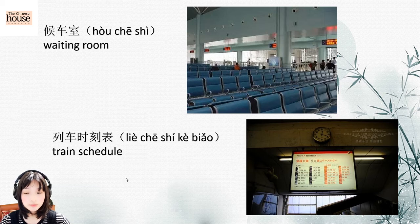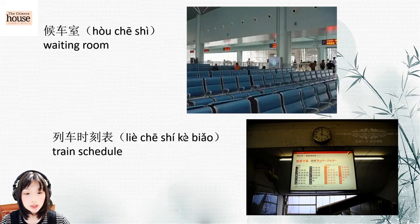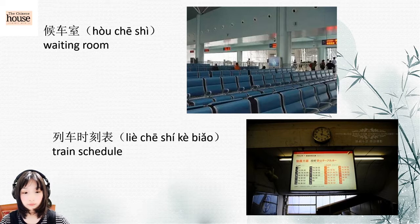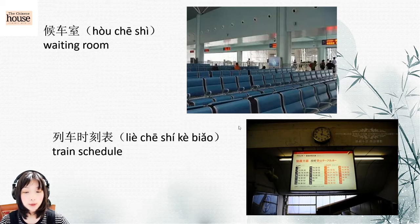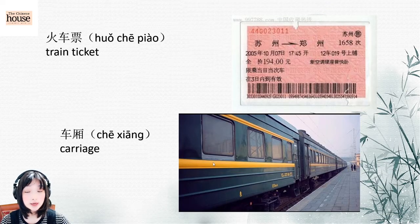And then train schedule: 列车时刻表 (liè chē shí kè biǎo). 列车 means train, 时刻 means time, and 表 means form. 时刻表 means schedule. 列车时刻表.